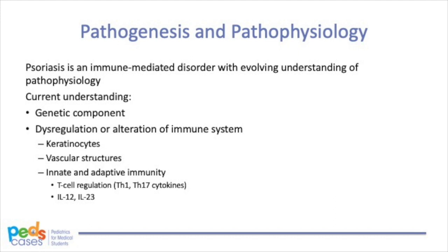Psoriasis is a dynamic and heterogeneous condition. People can have variable presentations of the disease, ranging from a limited and localized rash causing minimal distress, to life-threatening presentations such as generalized neonatal pustular dermatosis. Psoriasis is an immune-mediated disorder, and our knowledge of its complex pathogenesis is constantly evolving. There is a genetic component, and clinical manifestations are thought to be multifactorial, caused by dysregulation of keratinocytes, vascular structures, and components of the innate and adaptive immunity. T-cell regulation is notably impaired, with Th1 and Th17 cytokines predominating — in contrast to atopic dermatitis, which is a largely Th2-mediated process. IL-12 and IL-23 are also important inflammatory mediators involved in psoriasis.